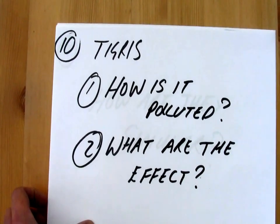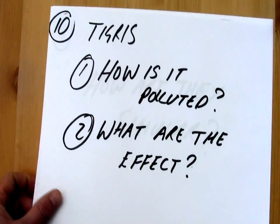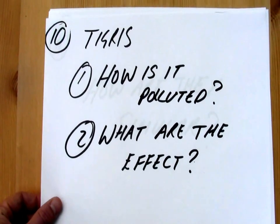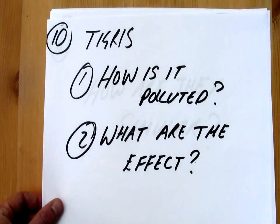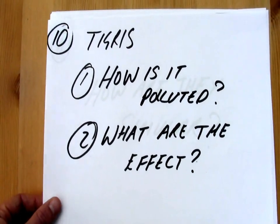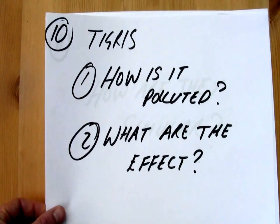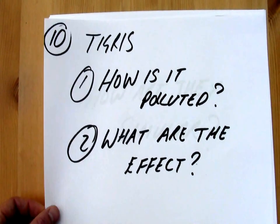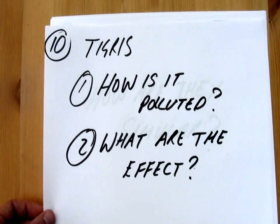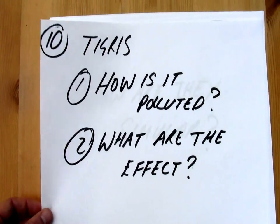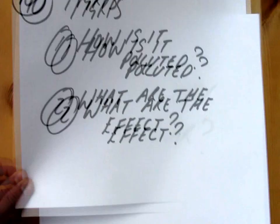Next we're going to move onto the river Tigris and you're going to do exactly the same. Question one: how is it polluted? Question two: what are the effects? And remember you still need to be using social, economic and environmental categories.